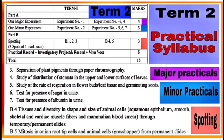First see the syllabus and marking scheme of the practical. There is one major experiment of 4 marks, from the 3rd and 4th experiments mentioned. One minor experiment of 3 marks, from experiment numbers 5, 6 and 7. And 3 spots of 1 mark each from practical numbers B4 and B5, where you have to identify and comment upon the given spots. Your practical record, investigatory project and VAWA all carry 5 marks. So total marks allotted are 15 in term 2 practical exams.